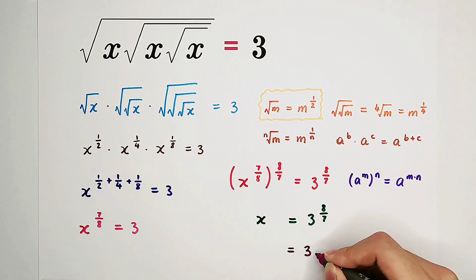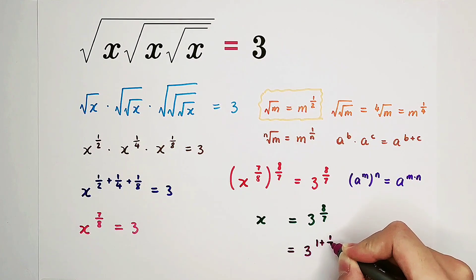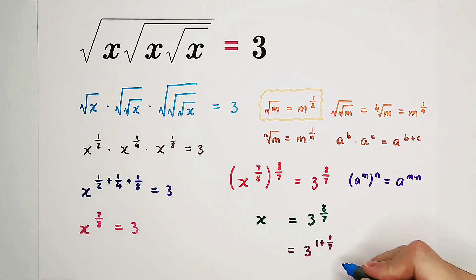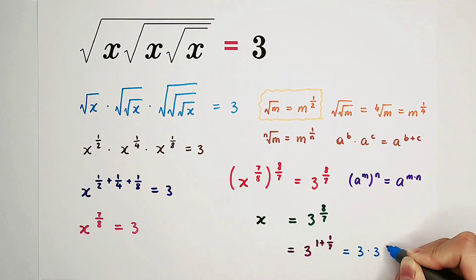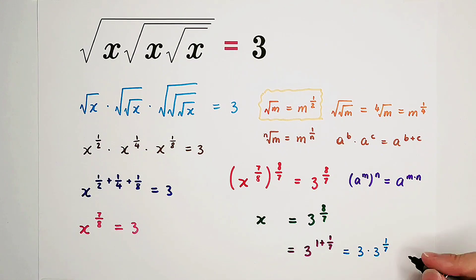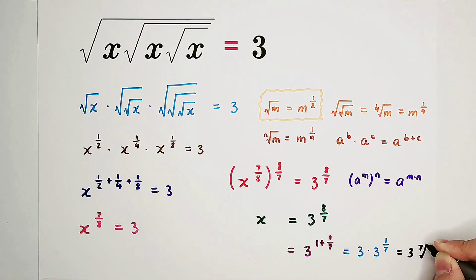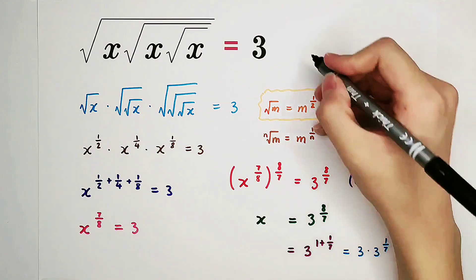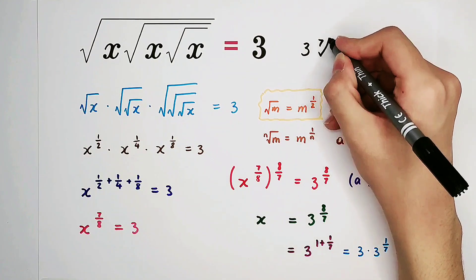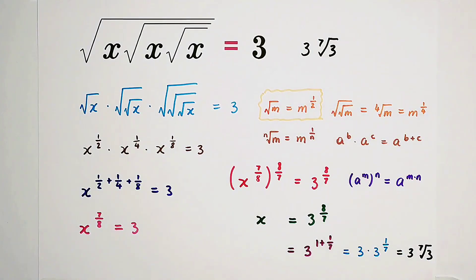It is 3 to the power of 1 plus 1 over 7, and this equals 3 times 3 to the power of 1 over 7. So the answer is 3 times the seventh root of 3. Did you get it? Give a thumbs up! Don't forget to subscribe for more wonderful questions. We'll see you next time. Bye-bye!